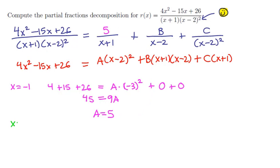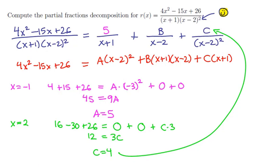Next, let's pick another x value, x equals 2. If we plug this into the equation, we'll have 16 minus 30 plus 26. The first term will cancel, plus a 0, the second term will cancel, plus c times 2 plus 1, or c times 3. That gives us the equation 12 is equal to 3c, so c is equal to 4. And now we can replace the c up top by a 4.